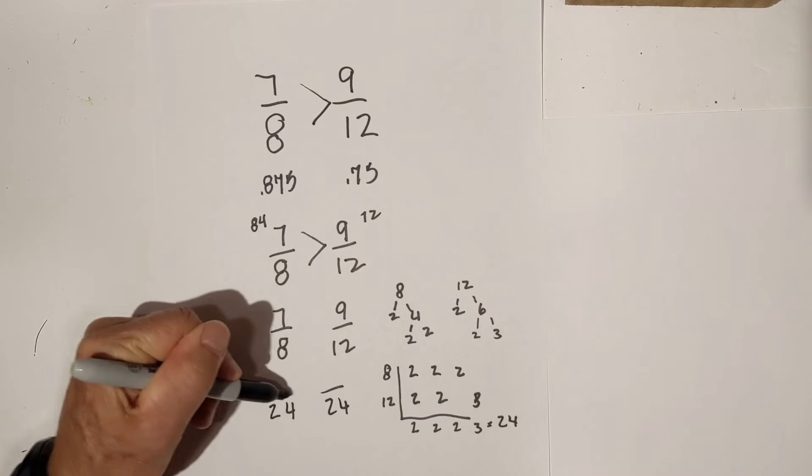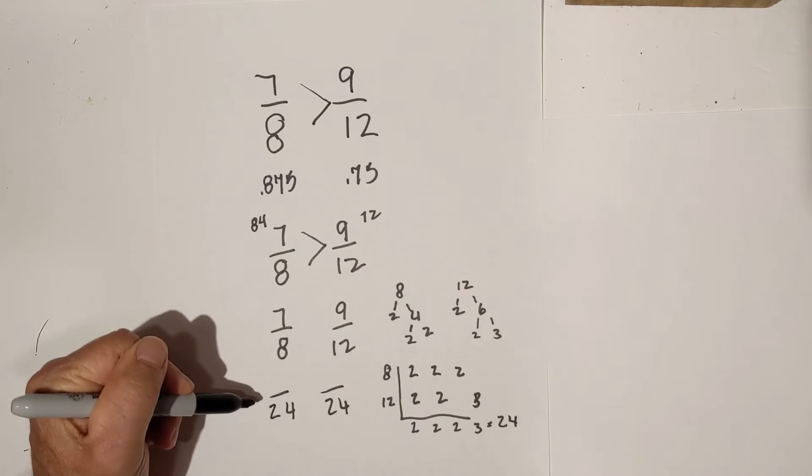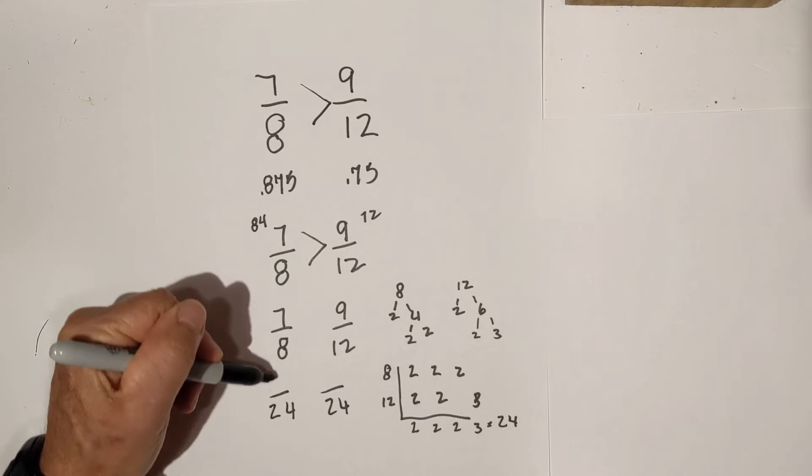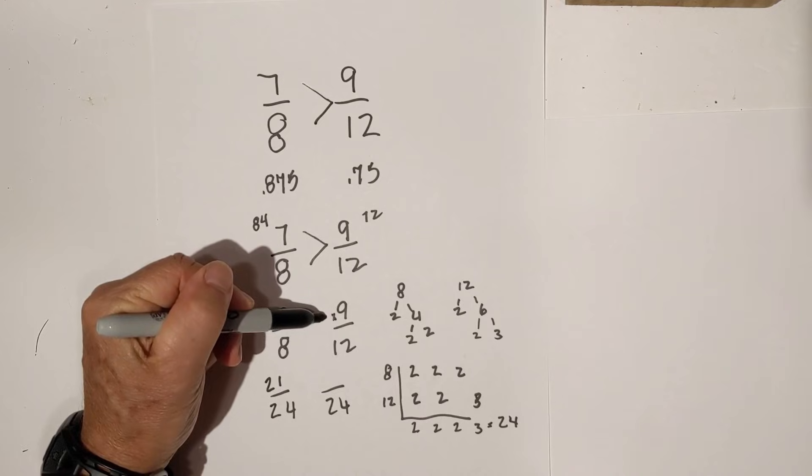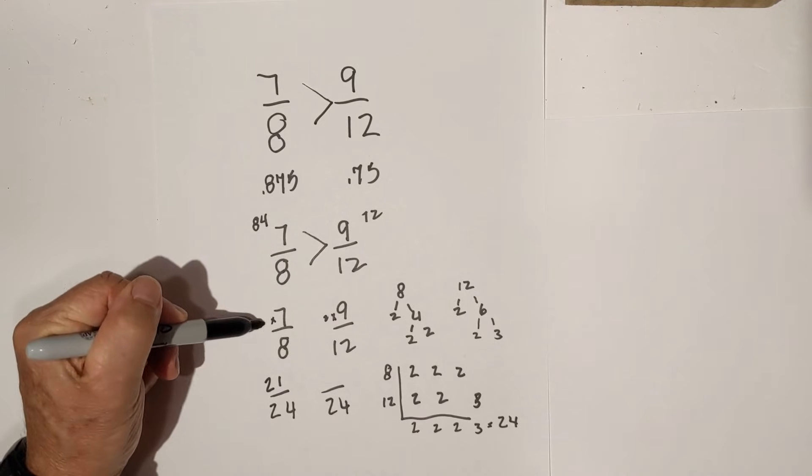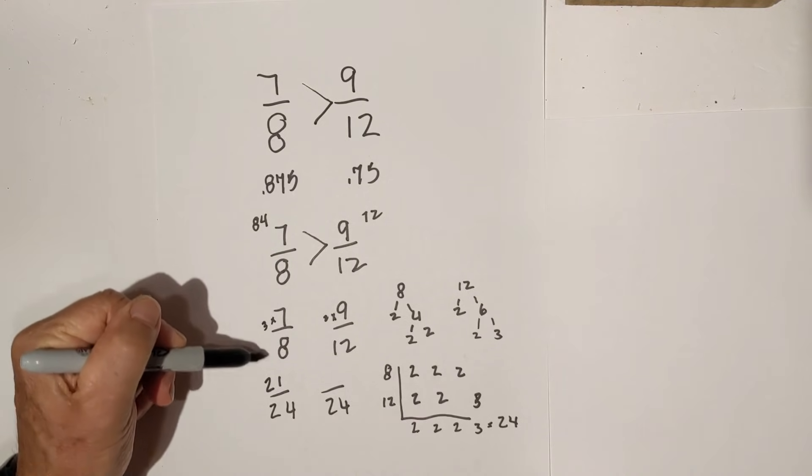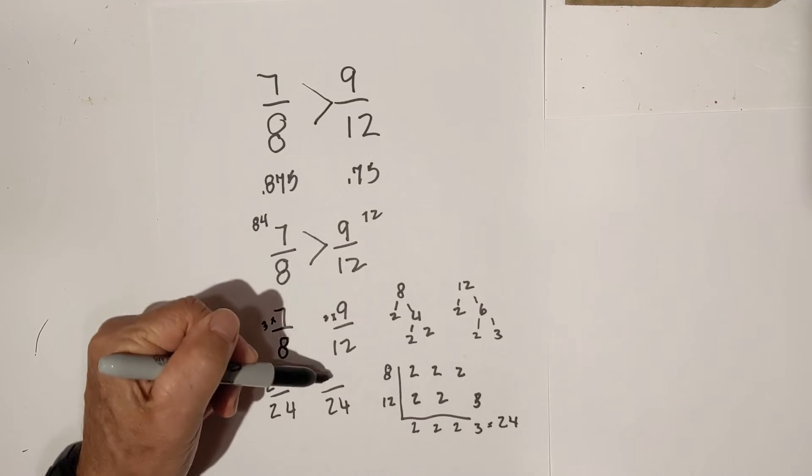And 8 goes into 24 3 times. 7 times 3 is 21. 12 goes into 24 2 times. Let me write the 3 here so you know what I did. 7 times 3 is 21. 9 times 2 is 18.